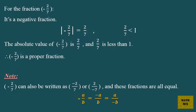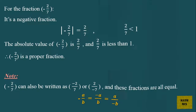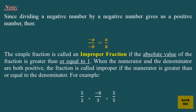Minus A over B equals minus A over B, which equals A over minus B. Note: since dividing a negative number by a negative number gives us a positive number, then minus A over minus B equals A over B.